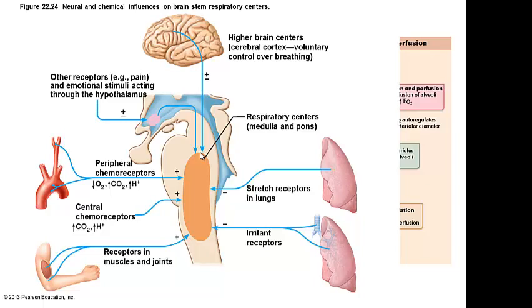Why can't you blow up your lungs indefinitely? Stretch receptors in your lungs hit a certain point and stop you from breathing in — the inflation reflex. All of those different reflexes help control the amount I inflate my lungs. The central chemoreceptor in the ventral respiratory group controls carbon dioxide and hydrogen — not oxygen directly — and sends messages based on those levels.